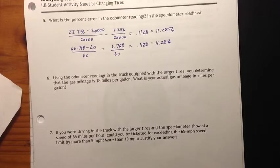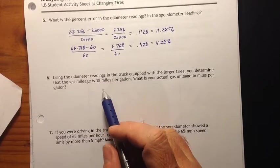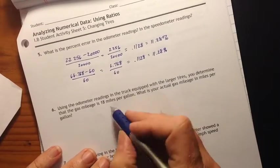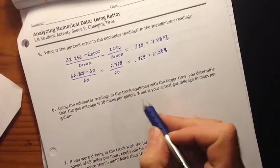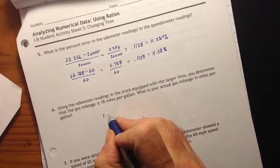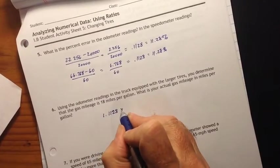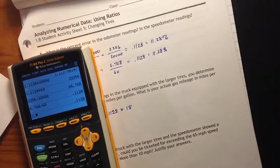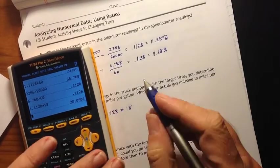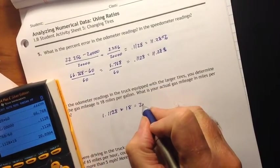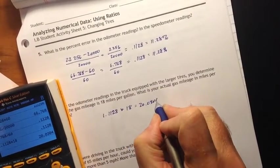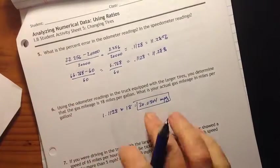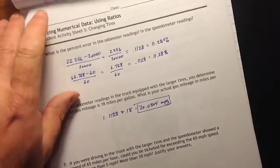Using the odometer readings in the truck equipped with the larger tires, you determine that the gas mileage is 18 miles per gallon. So what is your actual gas mileage per gallon? Well, if it's changing our mileage that much, then it's changing our gas mileage the same amount. We would take our K value, 1.1128, and we're going to multiply that times 18 miles per gallon, and I get 20.0304 miles per gallon. So a little bit better gas mileage than I thought we were getting. 18 is not that good. 20 is a little bit better.